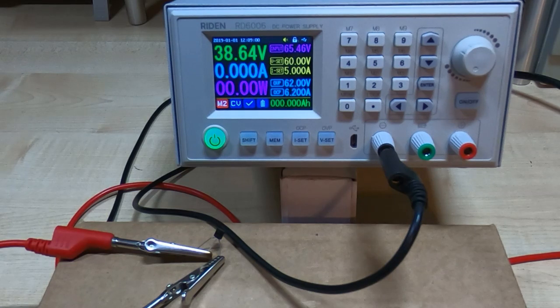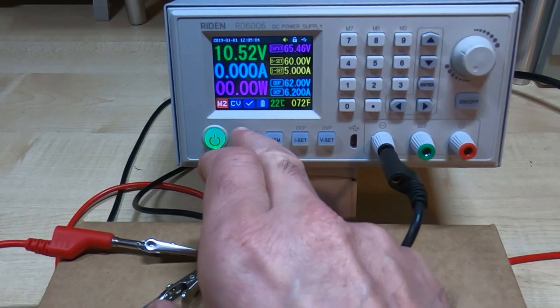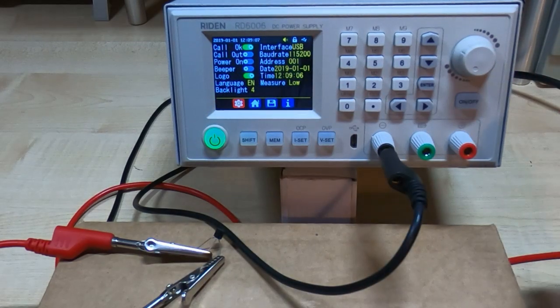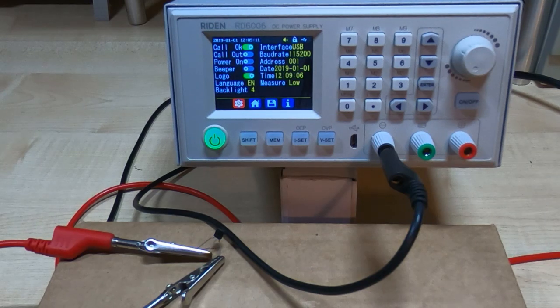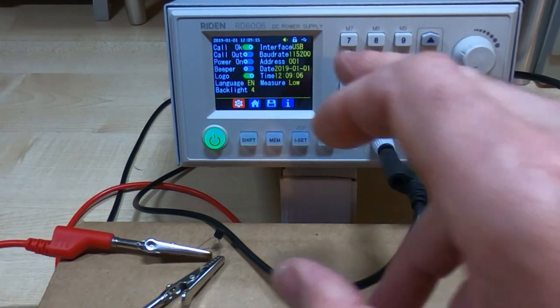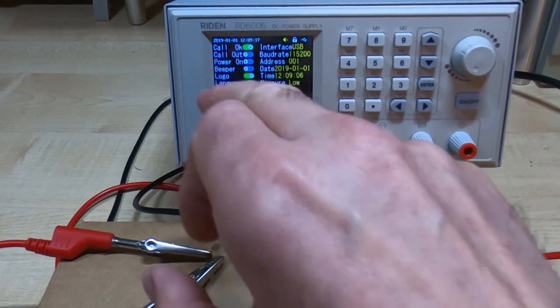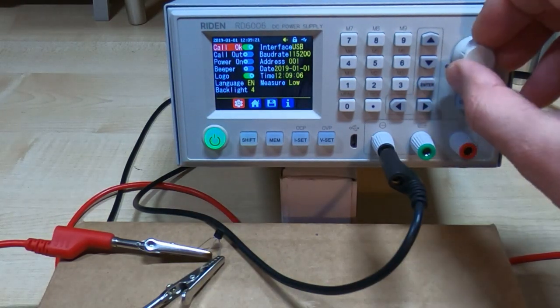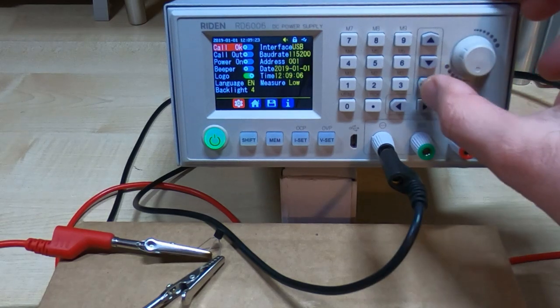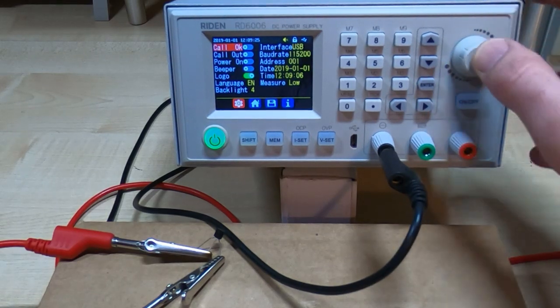But what I think is dangerous is there are two options. The first one I'll modify if we're going to the menu, we'll come to this menu system. And this is made worse by the fact they're not particularly clearly identified in terms of their function. So it's the first two: Call OK and Call Out. So I'll modify them one at a time. If I change the first one I'll set that to off, and now we'll exit the menu system.